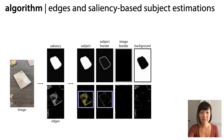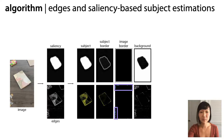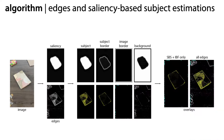Yellow designates edges within and around the subject, cyan for edges around the image border, and white for the remaining background edges. We merge these to form two edge-based overlays: the first shows all edges color-coded, and the second only shows relevant lines around the subject and image borders. We found in our survey that sometimes participants liked the extra context of the white lines, but other times it could be distracting.